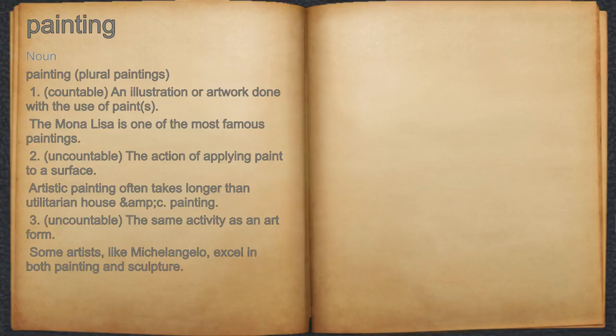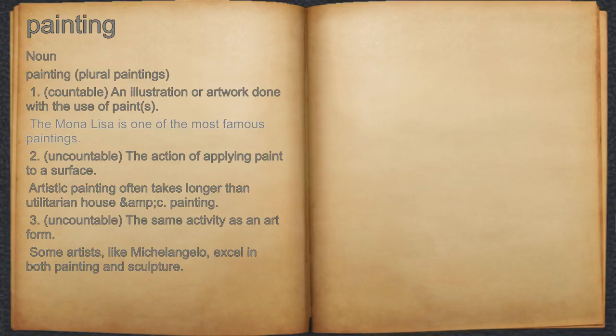Painting. Noun. 1. Countable — an illustration or artwork done with the use of paint. For example, the Mona Lisa is one of the most famous paintings.